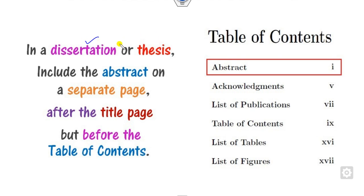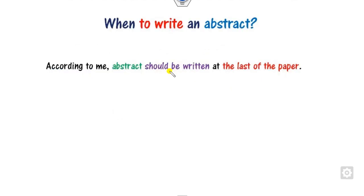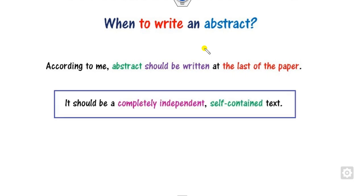When writing a dissertation or thesis, you have to write the abstract on a separate page. It should be placed after the title page and before the table of contents — either after or before the acknowledgement, but it must be before the table of contents. As per my experience, the abstract should be written at the end of the paper. Firstly, you have to write your introduction, results, conclusion, and so on. The abstract should be written at the end because it is a completely independent and self-contained text.